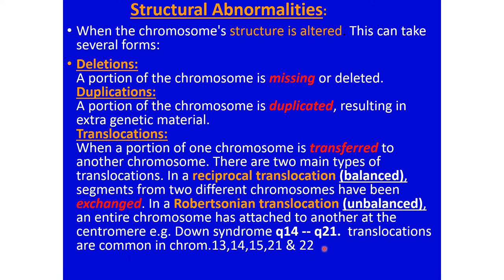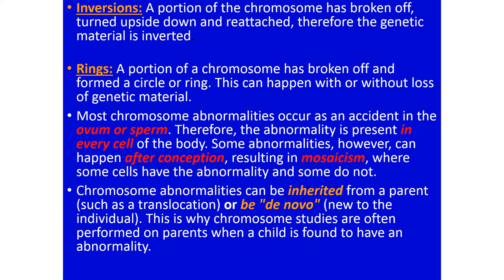Translocations are most common in chromosomes 13, 14, 15, 21, and 22 — these are the chromosomes that most commonly reflect translocation problems. Another structural abnormality is inversion: a portion of the chromosome breaks off, turns upside down, and reattaches to the same chromosome, so the sequence of genes is changed.